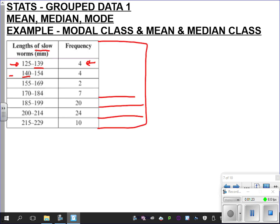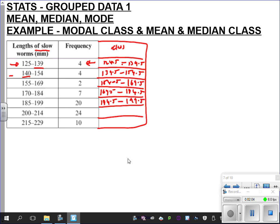So we can really quickly come up with that. Now from our Start of Confidence then, we know how to find the mean. So we'll quickly do that. So if we have new class system here, this is your length of slow worm. So 124.5 to 139.5, 139.5 to 154.5, 154.5 to 169.5, 169.5 to 184.5, 184.5 to 199.5, 199.5 to 214.5, and finally 214.5 to 229.5.